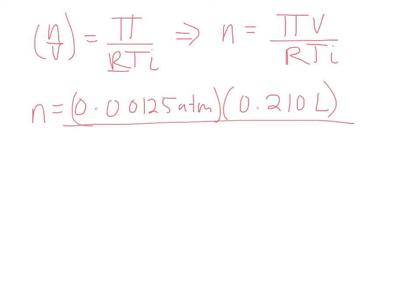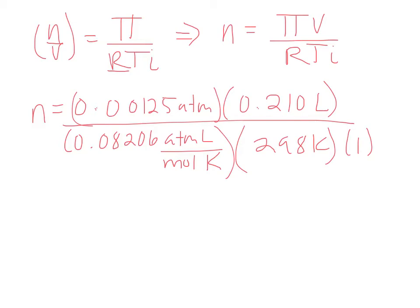Divided by R, which is 0.08206 atmospheres times liters per mole Kelvin, and our temperature, which is 298 Kelvin, times i, which is 1. If we do this, our number of moles equals 1.08 times 10 to the negative 5 moles of lysozyme.